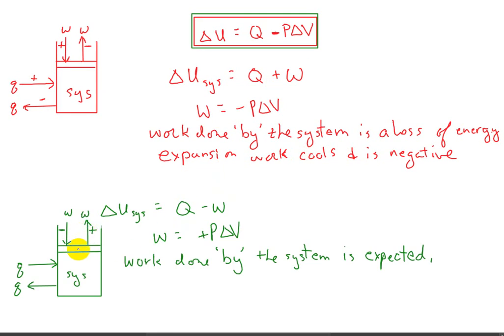In this green system, work done by the system is expected. Typically, the reason work gets done is because you're actually putting heat in causing the gas molecules to heat up and pushing the piston up. And that work is a positive thing. So in this case, expansion work is positive.